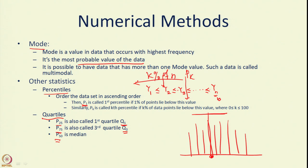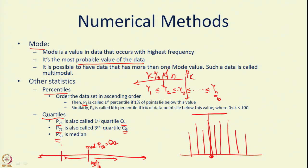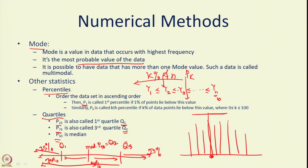Looking at the data on a straight line: 50 percent of the data is divided by the median, also called p50 or Q2. Q1 means 25 percent of the data lies on one side, and Q3 means 75 percent of the data lies on that side. These are some of the measures of central tendency, and there is a relationship between the three measures we have learned — mean, median, and mode.